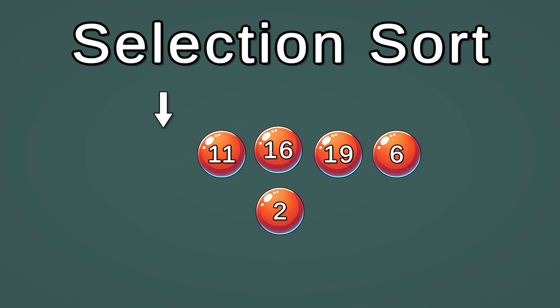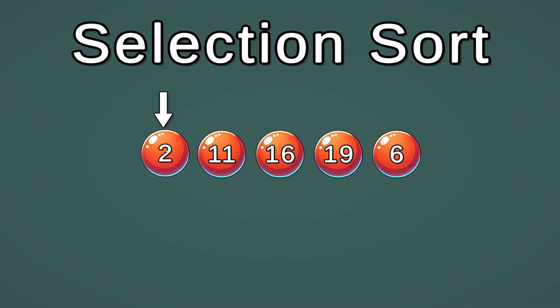This number needs to go in the first position. We put 16 into 2's place and 2 goes into our first position. So this is the smallest number of our array.